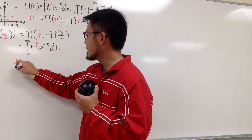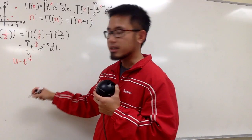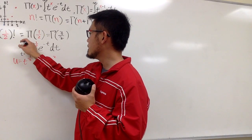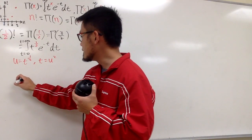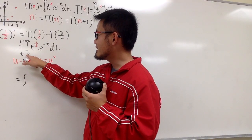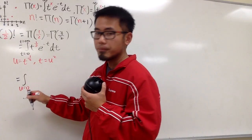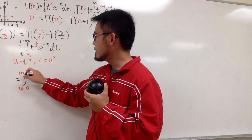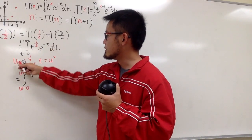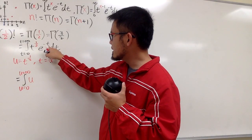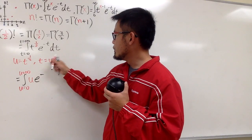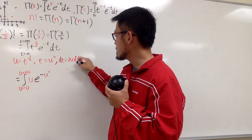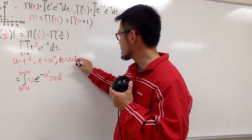Let u = t^(1/2), so squaring both sides gives t = u². The original integral runs from t = 0 to t = ∞. In the u world: when t = 0, u = 0; when t = ∞, u = ∞. Now t^(1/2) = u, e^(−t) becomes e^(−u²), and differentiating t = u² gives dt = 2u du. Substituting everything in, we get 2u du as the differential, placed into the integral.